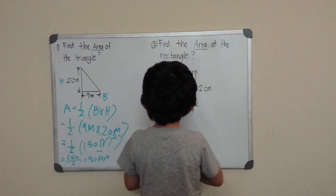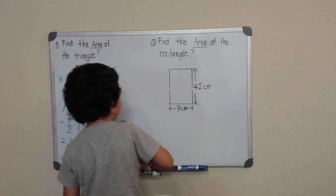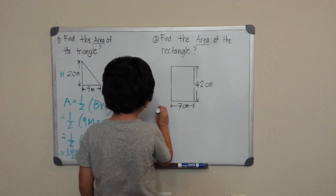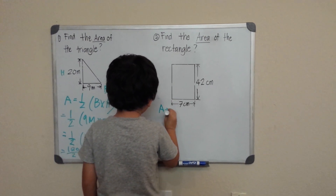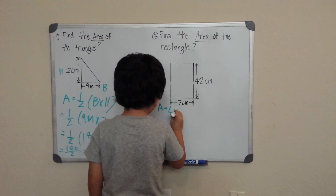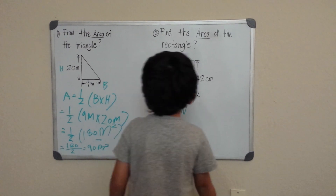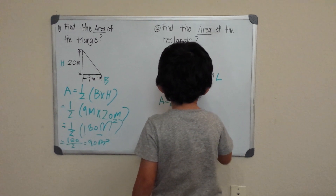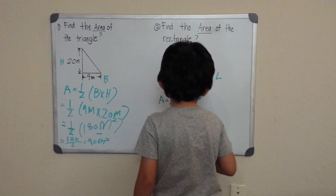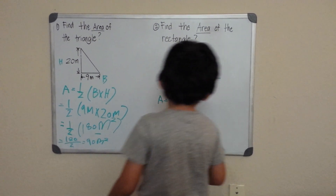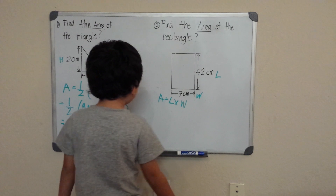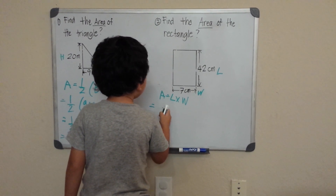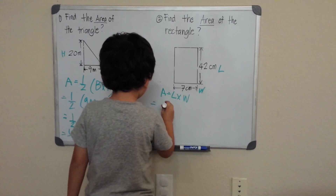Next, the last one is a rectangle. What is the formula for the rectangle? The formula for the rectangle is area equals length times width. Here is our length, and the width is short. So we just plug them in — this length is 42 centimeters.